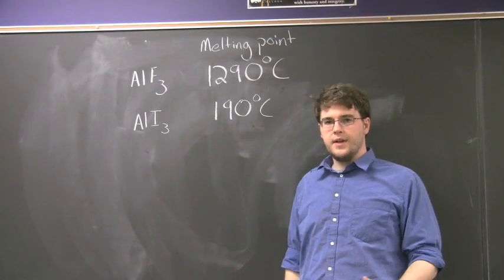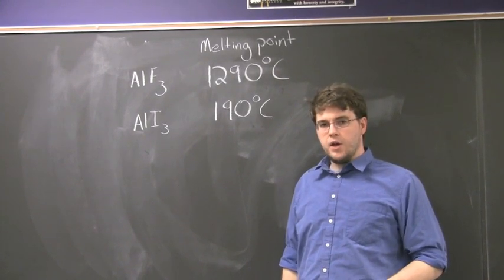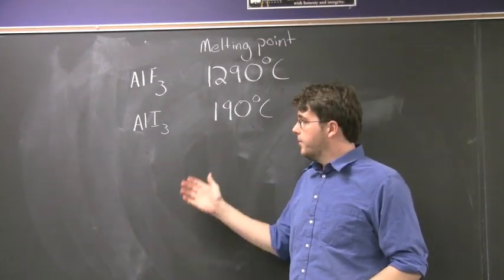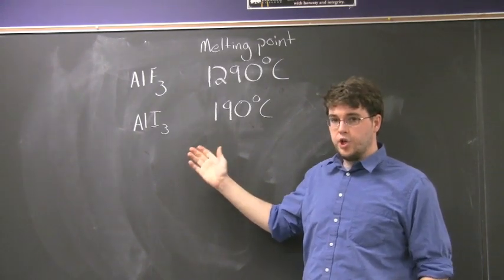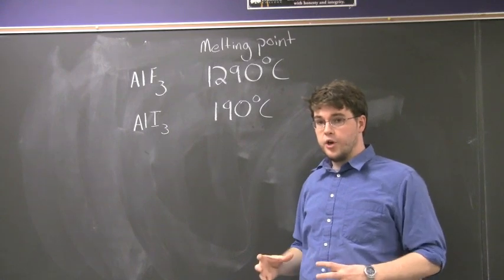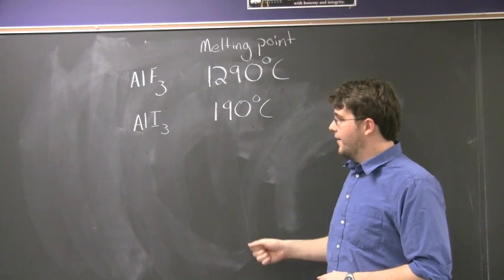Okay, so we wanted to give an example about how anion size matters. And a good depiction of this is in these two similar molecules, aluminum trifluoride and aluminum triiodide. And while they are similar in charge, the anion for iodine is actually significantly larger, which makes it much more covalent than the fluorine molecule.